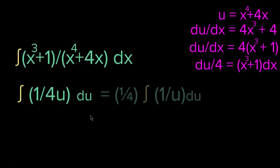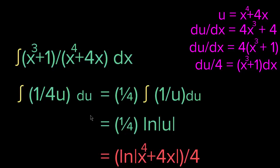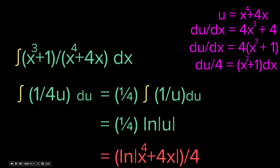The integral of 1/(4u) du equals (1/4) · ln|u|, which equals (1/4) · ln(x⁴ + 4x). So the integral of (x³ + 1) / (x⁴ + 4x) dx equals ln(x⁴ + 4x) / 4, plus a constant. We substituted x⁴ + 4x as u, found du/4 = (x³ + 1) dx, solved, and substituted back. Don't forget the plus constant.